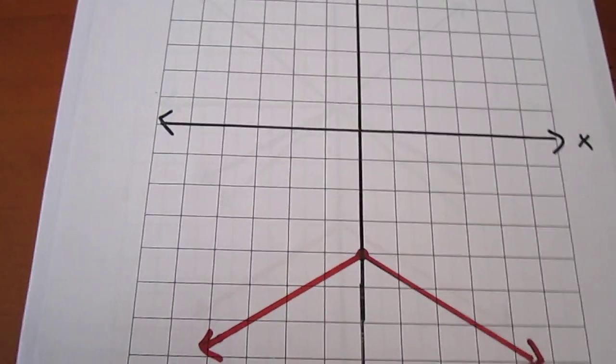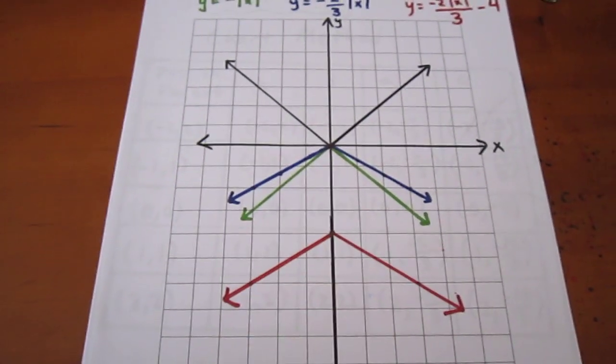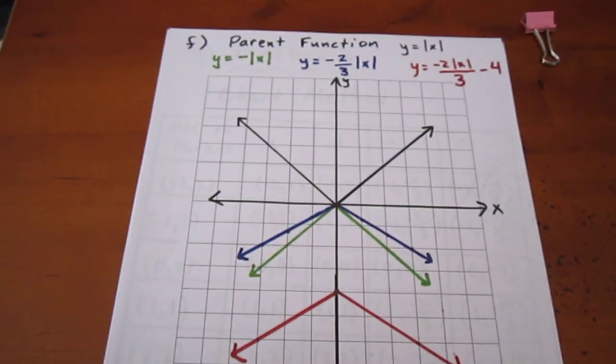If we wanted to see all those transformations on one graph, it would look something like this.